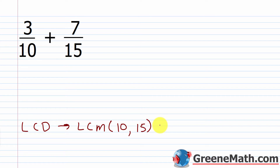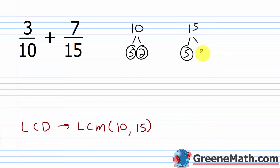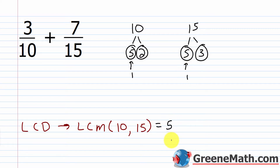Hopefully you remember how to do this from pre-algebra, but if not, you basically just factor each number. For 10, it's 5 times 2 — five is prime and so is two. For 15, it's 5 times 3 — five is prime and so is three. Each prime factor from every prime factorization goes in your list. If you have a duplicate prime factor, it only goes in the largest number of times it occurs in either factorization. Five occurs once in each, so I put just one factor of five in.